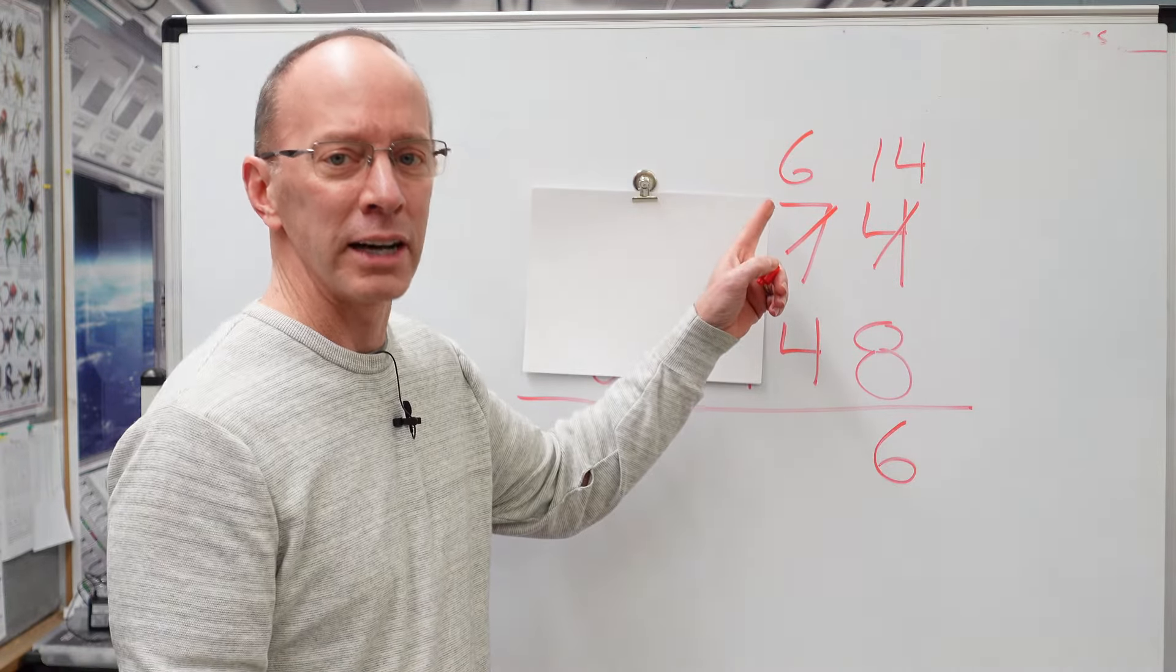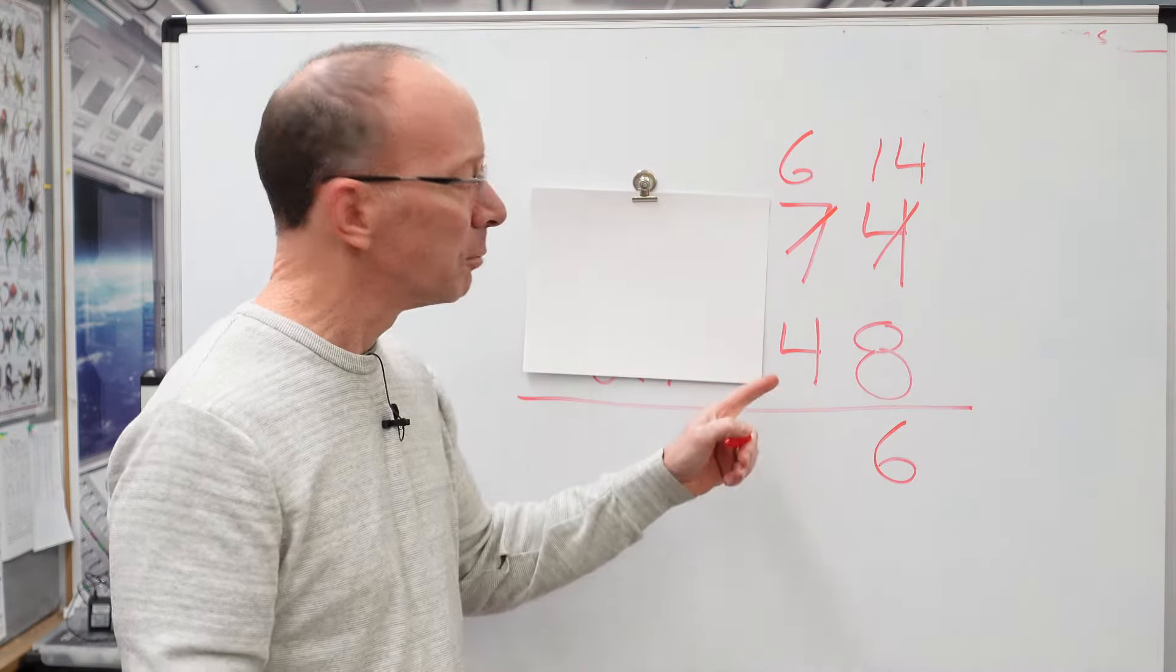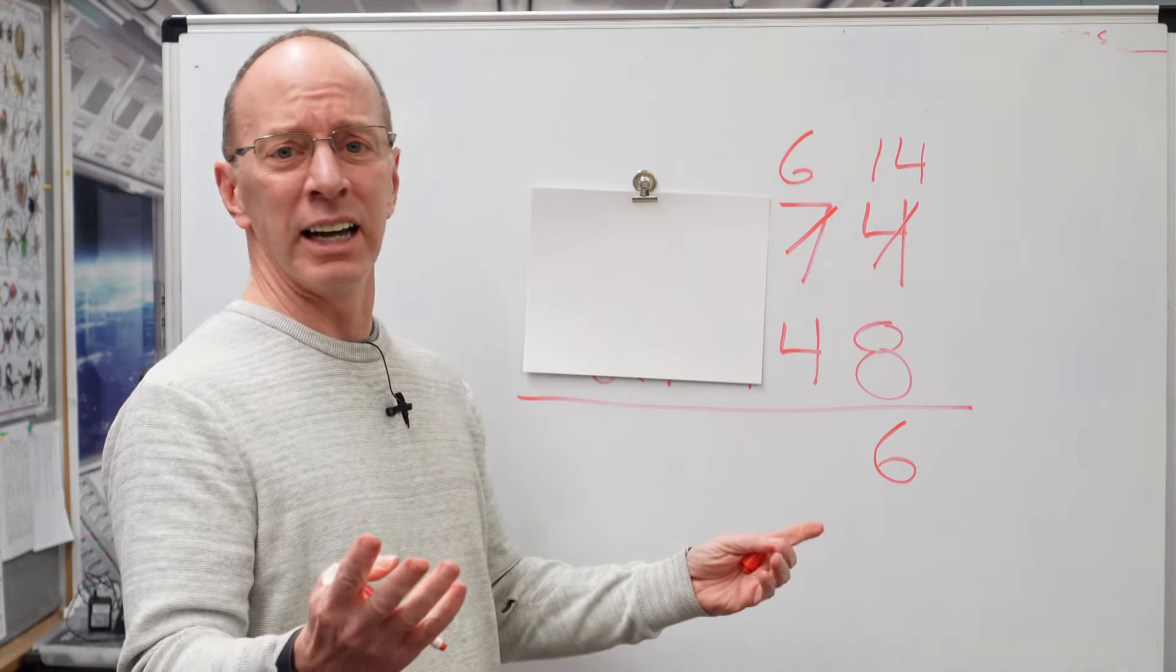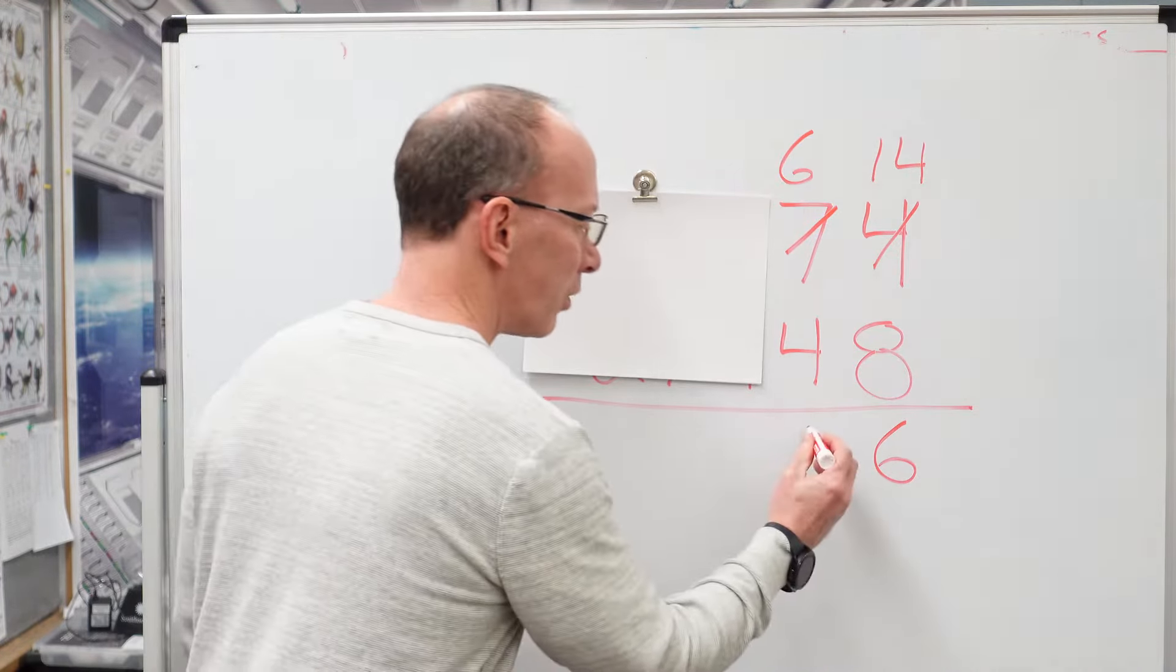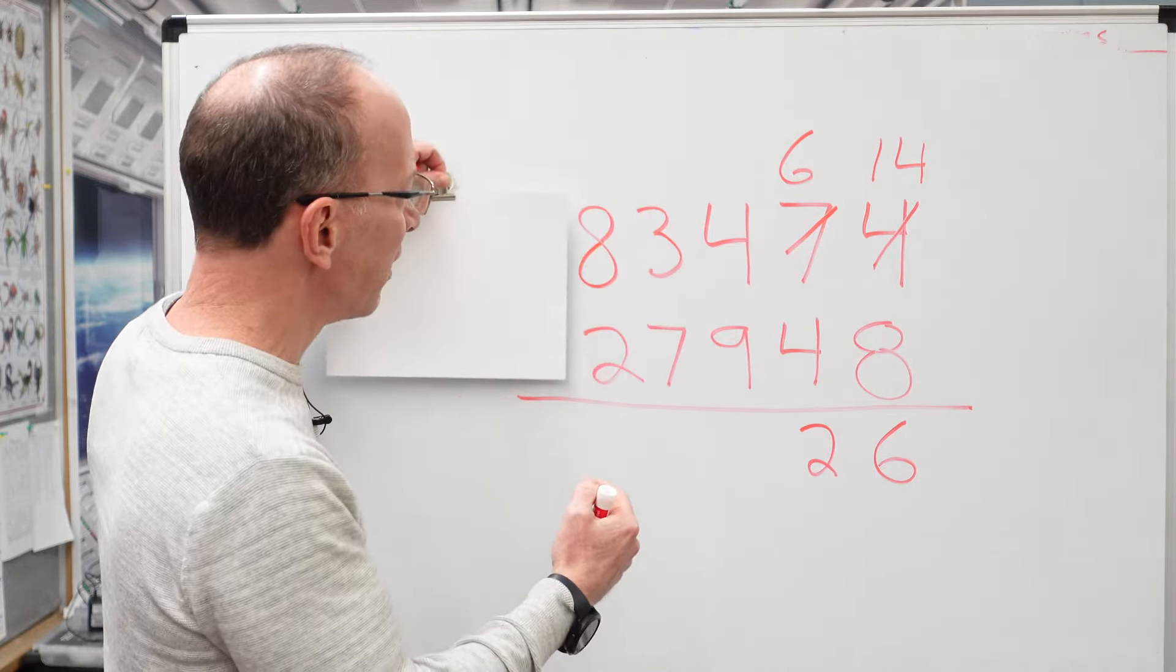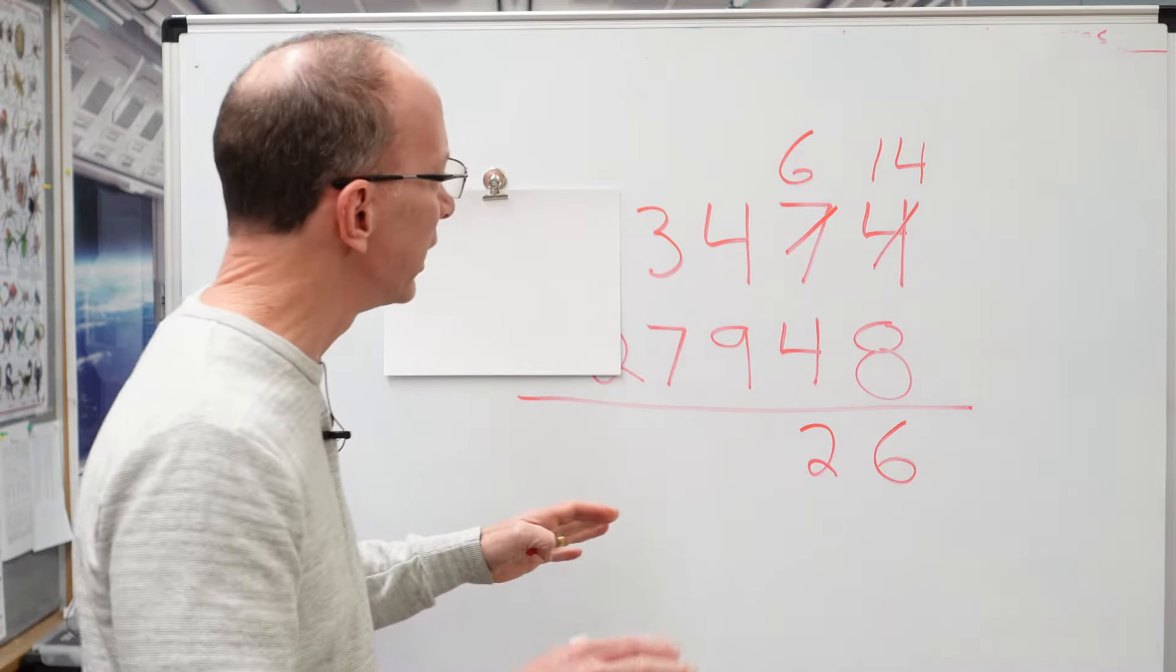We start subtracting the tens. Now we move it over. Can we do it? 6 minus 4. I got 6 cookies, you want 4 of them? I can do it. I can share some of my cookies with you. So 6 minus 4 would be 2.